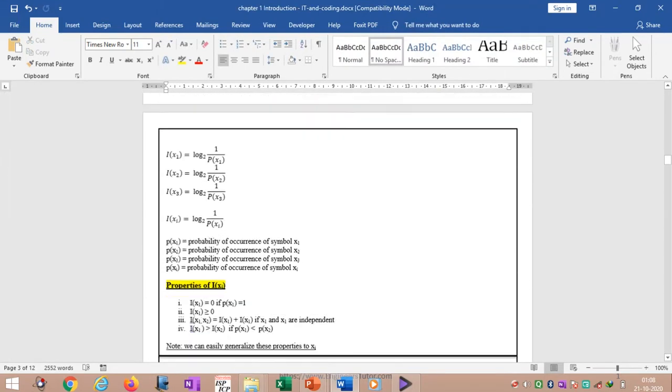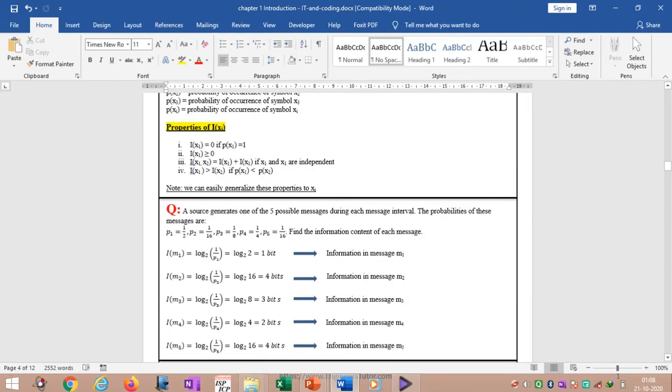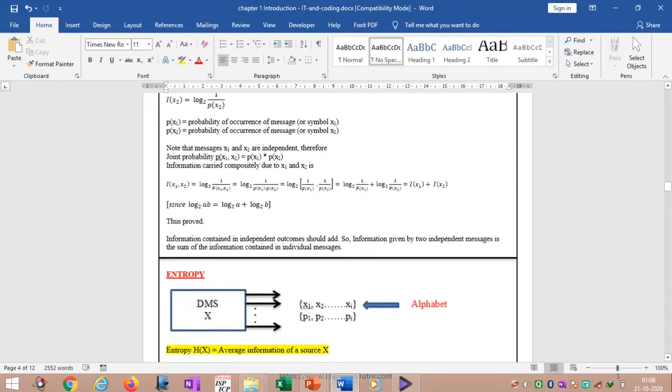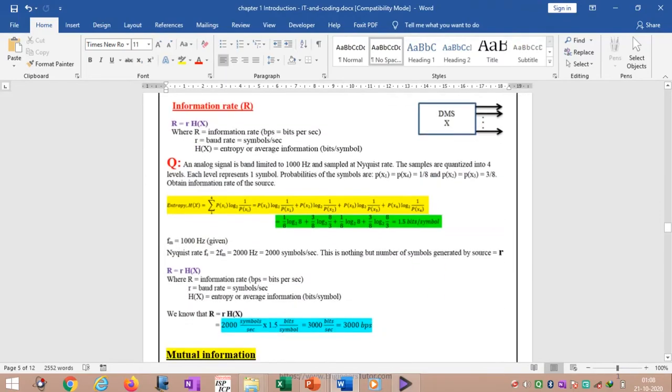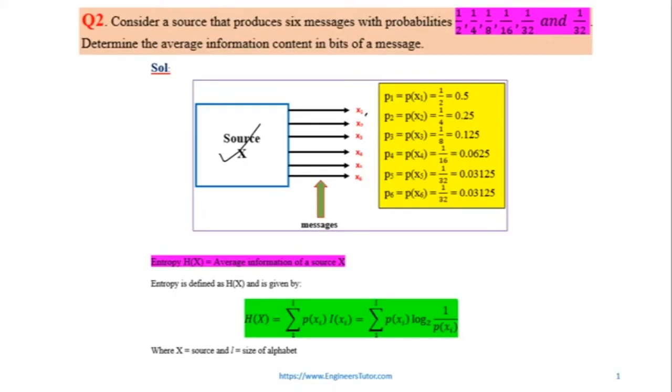What is the source? The source produces six messages, X1 to X6. So you can find these materials on my website if you are interested. Source produces six messages, X1 to X6, so this source is a discrete source. Discrete means countable, we can count one, two, three, four. Here six: one, two, three, four up to six.